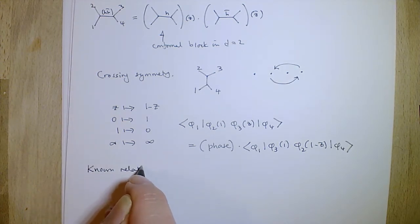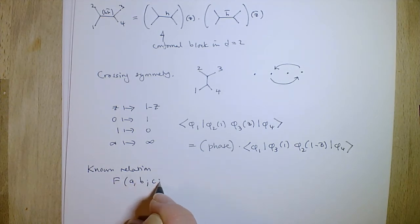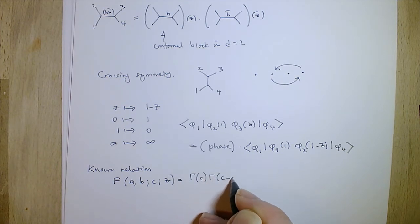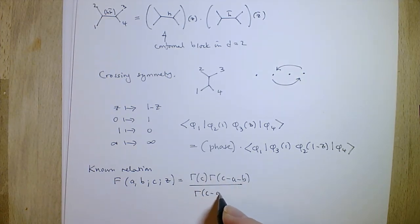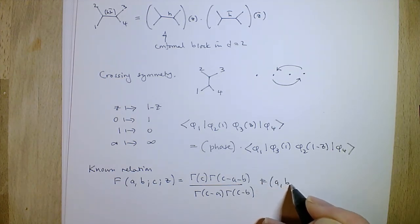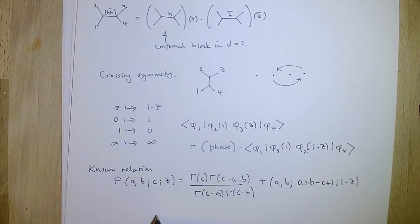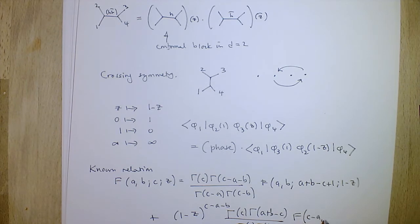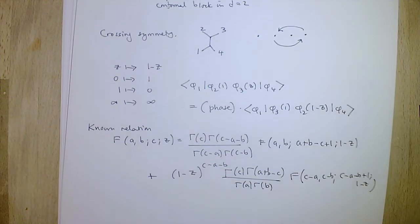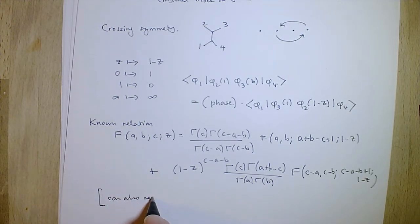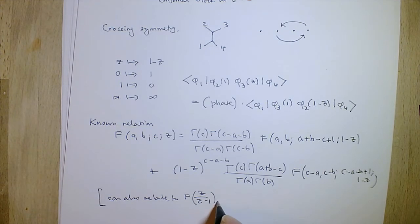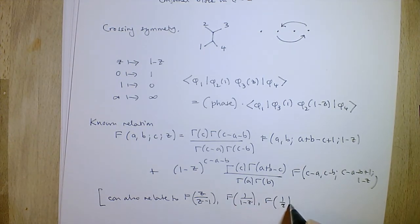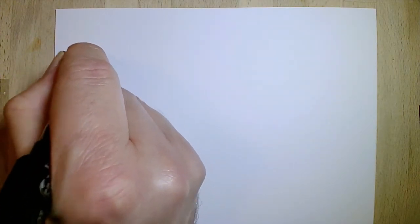One thing known about the hypergeometric function is exactly its crossing properties under z goes to 1-z. It satisfies a related differential equation and can be expressed in terms of solutions to that hypergeometric differential equation and its second solution. It can also be related to the function at z/(z-1), 1/(1-z), and 1/z. These are in all standard textbooks on special functions — I use Gradshteyn and Ryzhik; Abramowitz and Stegun will also have it.